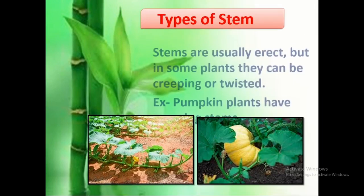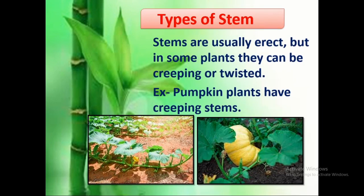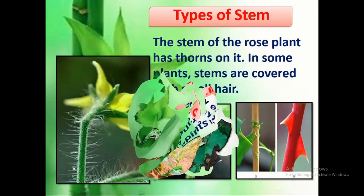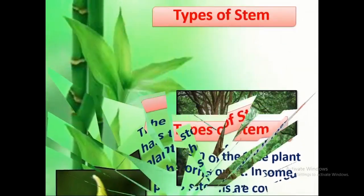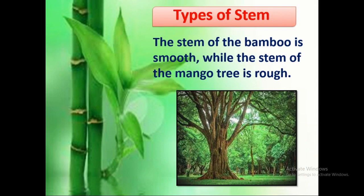Stems are usually erect, but in some plants they can be creeping or twisted. The pumpkin plant is one example of a plant with a creeping stem. Some stems have thorns and some stems have hairs — these are also a type of stem. The stem of bamboo is smooth, while the stem of the mango tree is very rough.